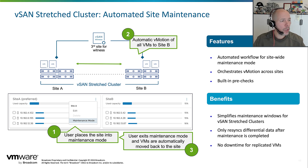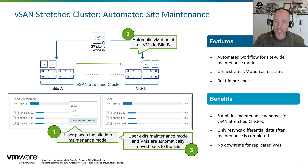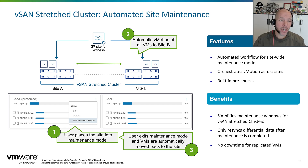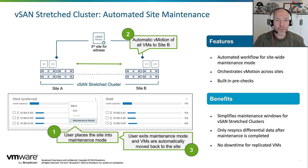If you look at how you do this today — say you have three or four hosts within each site — you actually need to go to every single individual host and place it into maintenance mode. The downside of that is that in the meantime, data could still be replicated between site A and site B, which could result in data stored on the first host being different from data stored on the second host. This leads to inconsistency, which is of course something you want to prevent.